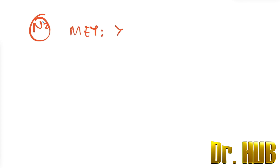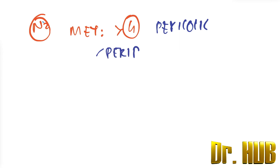In the 7th edition, N2 means metastasis in greater than 4 pericolic or perirectal lymph nodes.